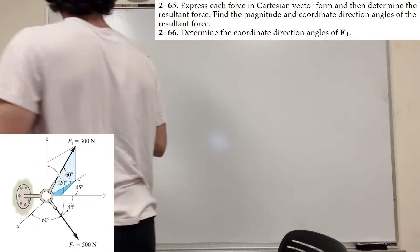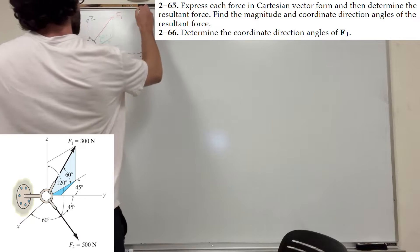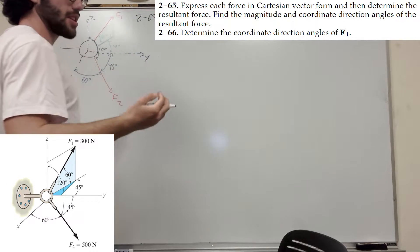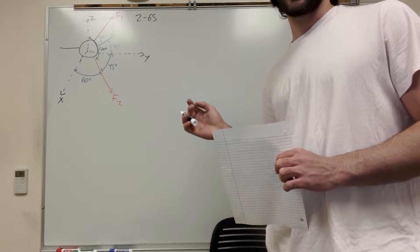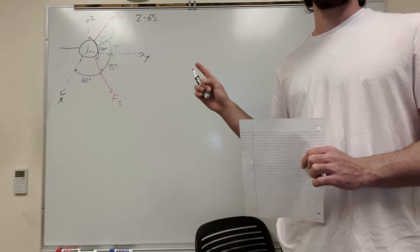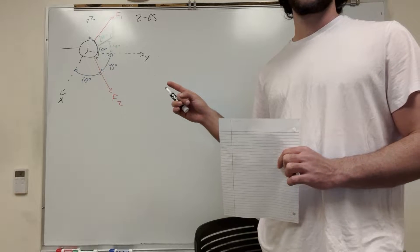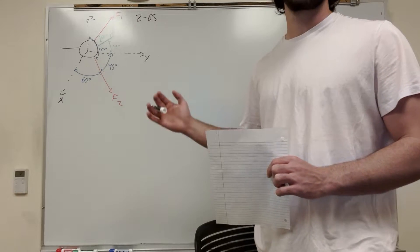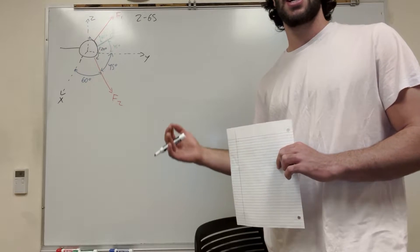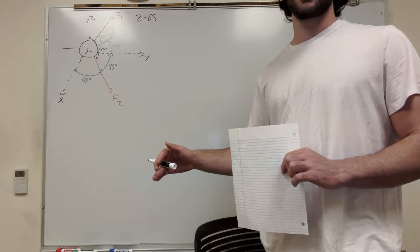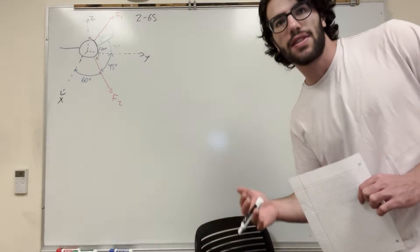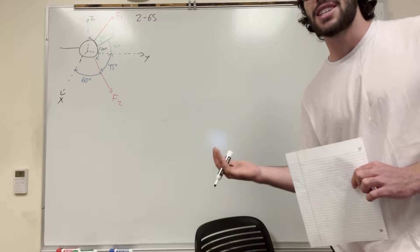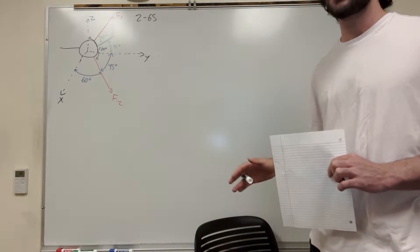I've stated the problem — this is 2.65. So what are we asked to do? We're looking at this chain, and it's got two forces pulling on it. It wants us to find each force in Cartesian vector form, determine the resultant force, find the magnitude of the resultant force, and then the direction angles of the resultant force. It's kind of guiding us through this problem — the steps you need to take are basically the steps to find each next part.